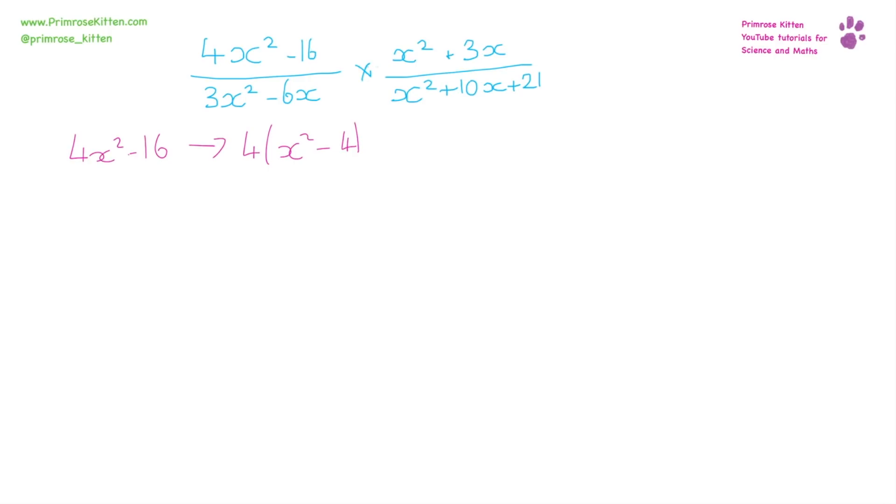And x² - 4 is the difference of squares, so that is 4(x - 2)(x + 2).